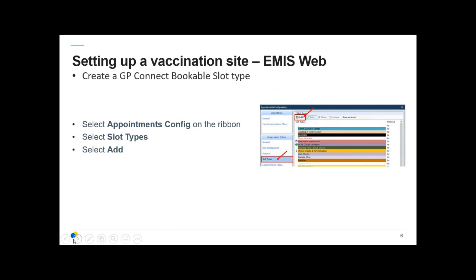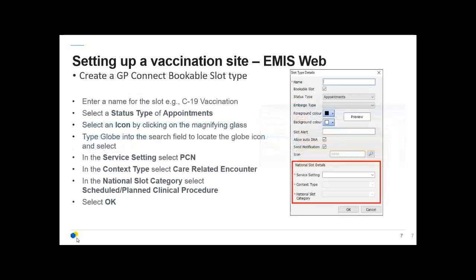Once you've created the group, you need to create some bookable slot types. In the appointments config, select slot types then Add, and name your slot — bearing in mind that the people booking in will be able to see this slot name. This is especially important if you're already using GP Connect appointments across your PCN, so make it explicit that this is a vaccination slot type.